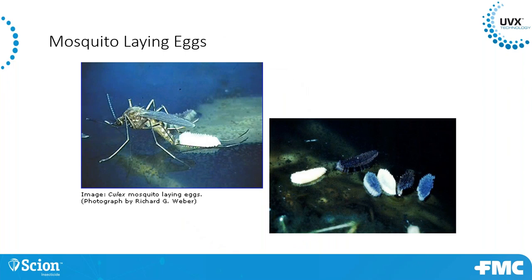This is a Culex laying egg rafts. If there are water sources around a customer's home, you can look for egg rafts like these. Other species lay single eggs — some with floats on the side. This is a good indicator of where the problem is originating, and also a way to identify what species you're dealing with. Culex lays rafts, Aedes species lay single eggs, and Anopheles lay a single egg with floats on the side.